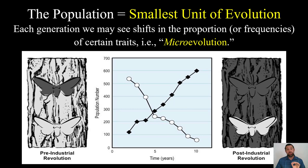It is the population that exhibits what we call microevolution — changing allele frequencies, and subsequently the genotype and phenotype frequencies — from one generation to the next, as our population of peppered moths illustrates after the Industrial Revolution. A classic example of microevolution.